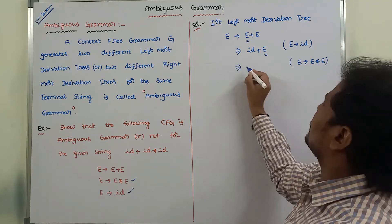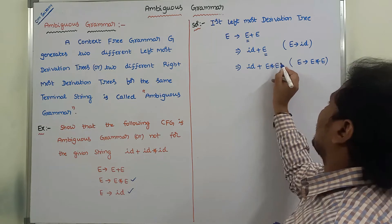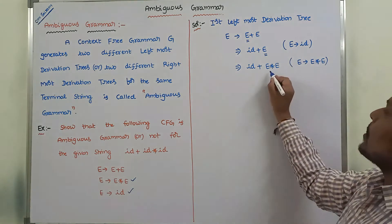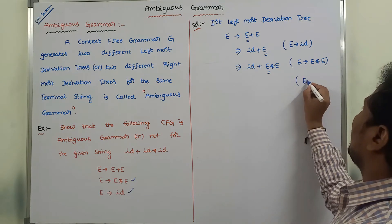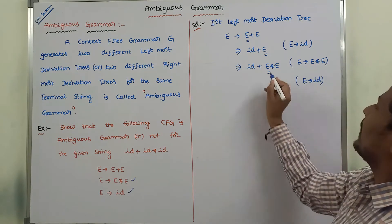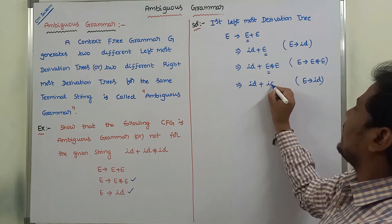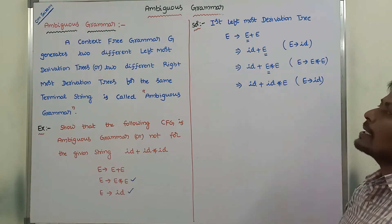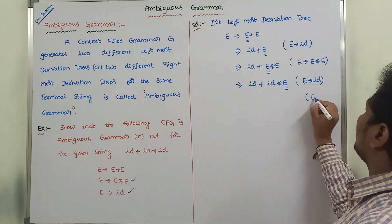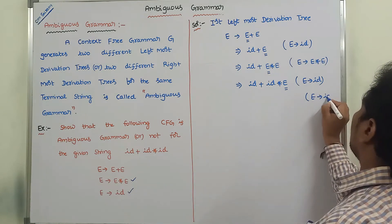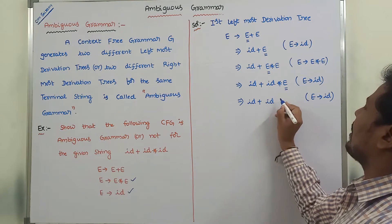So that gives us E plus E star E. Next, what is the leftmost non-terminal here? This is the leftmost non-terminal. We are substituting E derives to id in the place of this non-terminal E. So, we get id plus id star E. Now, what is the leftmost non-terminal? Here, this one. Again, substitute E derives to id in the place of E. So, we get id plus id star id.